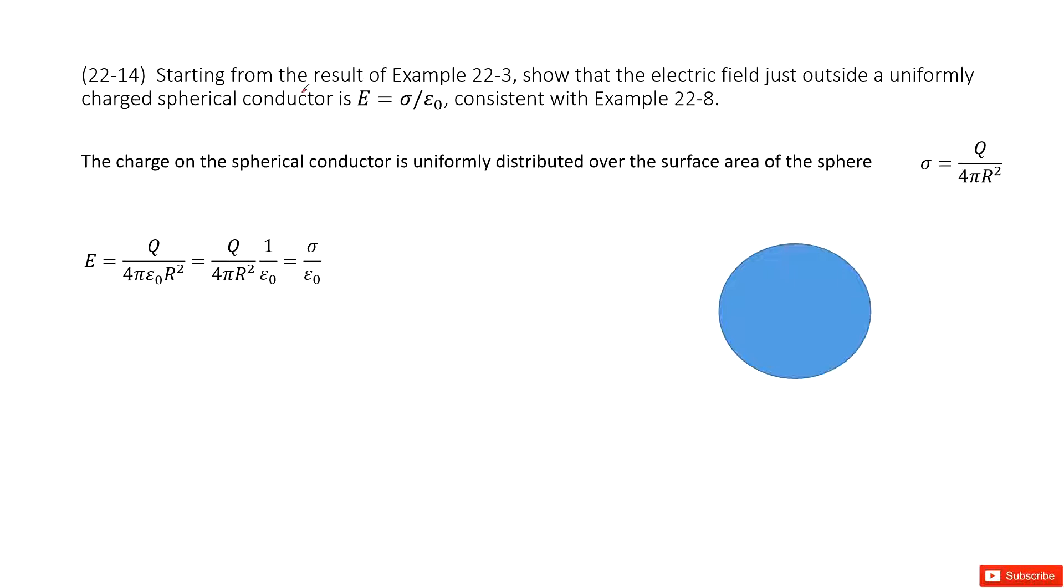So from this one, we need to prove the electric field just outside a uniform charged spherical conductor is this function, right? So now we have several key words: conductor. For a spherical conductor, the charge is uniformly distributed at the surface. Do you agree? Yes.